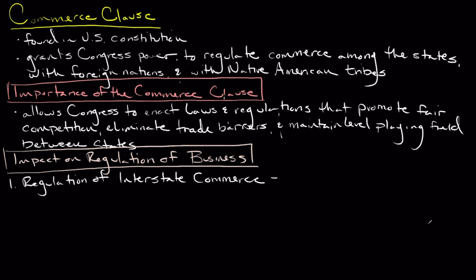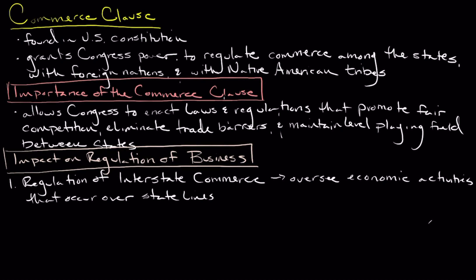One significant effect of the Commerce Clause is the regulation of interstate commerce. Congress has the power to oversee economic activities that occur across state lines, done to prevent individual states from enacting protectionist measures or imposing burdensome regulations that hinder the flow of goods, services, and capital. This allows for a consistent and predictable business environment for companies operating in multiple states.